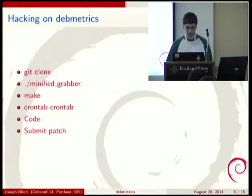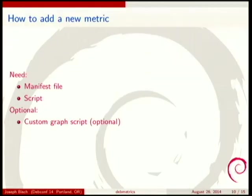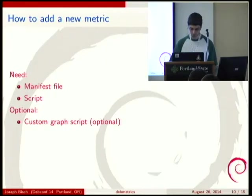Here's how to hack on DebMetrics and how to add a new metric. You need to add a manifest file to the manifest directory. If the metric is a pull metric, add a pull script to the pull scripts directory. If it is a push metric, add a push script to the remote server and a cron entry to run the script periodically.